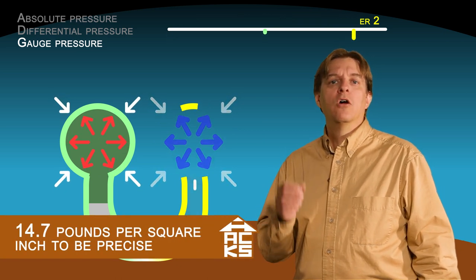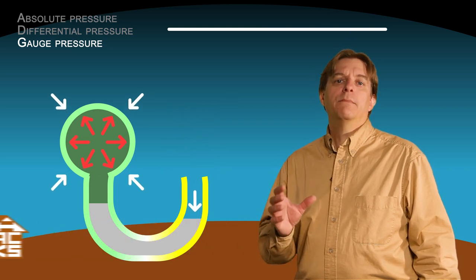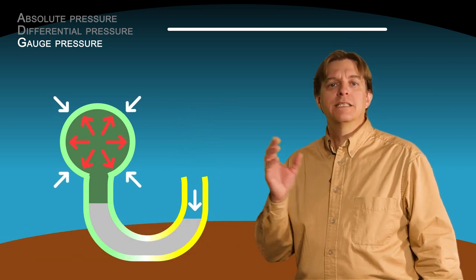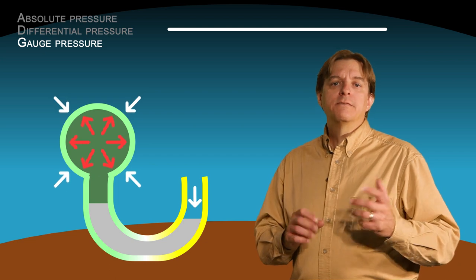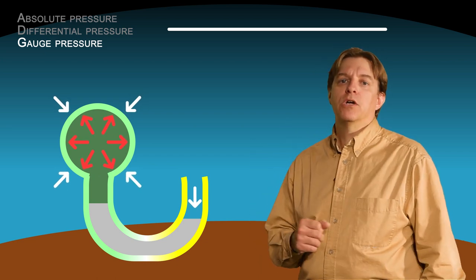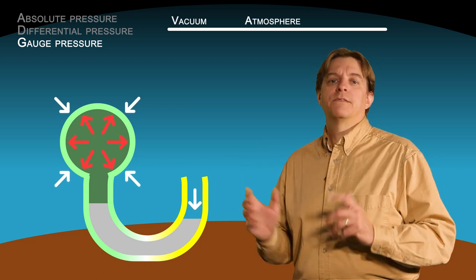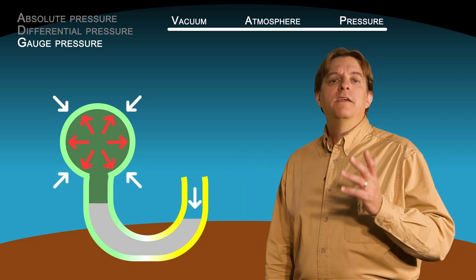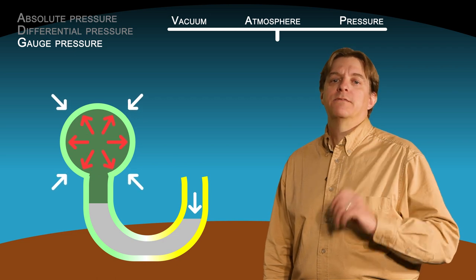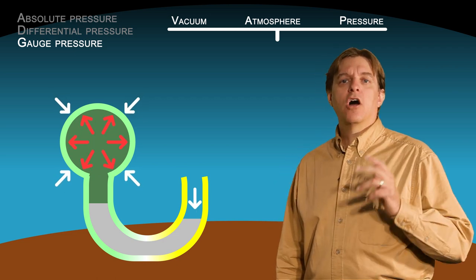If we eliminate one of the containers, the U-shaped tube will now measure the pressure inside the remaining container relative to the atmosphere's pressure. This is known as gauge pressure. It is the pressure of one system relative to the current atmospheric pressure. For convenience, we set the zero point to atmospheric pressure.